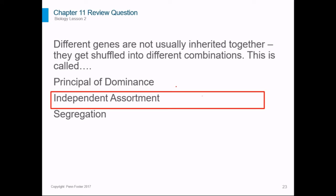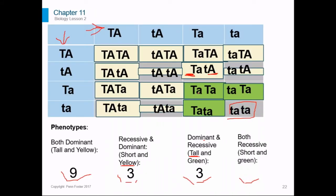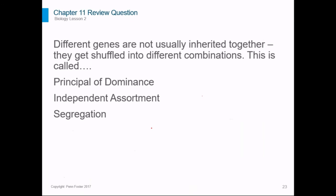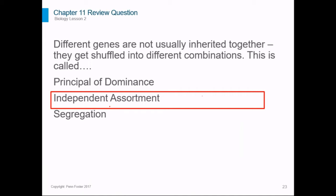The right answer here is independent assortment. Different genes get shuffled around when they're inherited — they are not inherited together. You can inherit your mom's eyes and your dad's nose and your mom's ears and your dad's lips; it's just everything getting shuffled around. In plants, we're talking about height and color. Those two things get split up and shuffled around in the offspring. A lot of people said principle of dominance — that's not what this is. The principle of dominance is that one gene will be dominant over another; that has nothing to do with how they're sorted and split up in the offspring. Segregation is when we're only talking about two alleles from the same gene — they get split up when the organism reproduces.